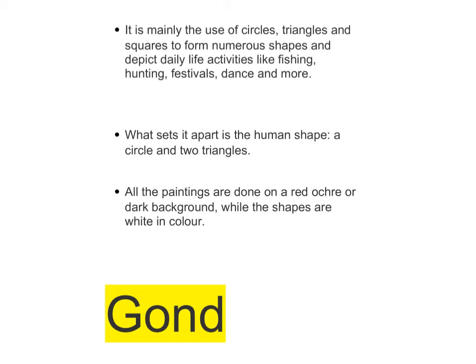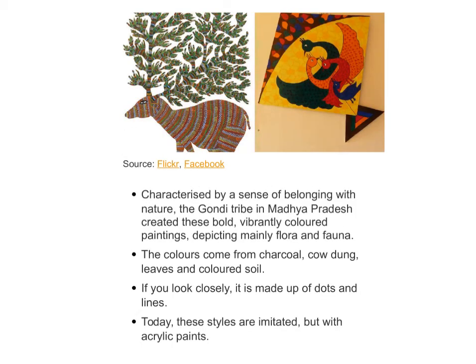The fifth painting is Gond painting. The Gond is a tribal community in Madhya Pradesh, and they have vibrantly colored paintings depicting mainly flora and fauna, as you can see in the picture. The colors come from charcoal, cow dung, leaves, and colored soil — totally natural. If you look closely, it is made up of dots and lines. Closely, if you see that peacock or that deer, you'll see it's composed of dots and lines.